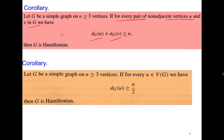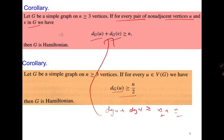Similarly, you can see the corollary: if degree(u) ≥ n/2 for all vertices, then degree(u) + degree(v) ≥ n/2 + n/2 = n. The same result applies and in that case G is Hamiltonian. Please do remember these results.